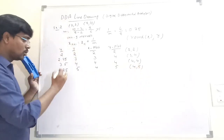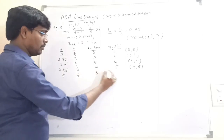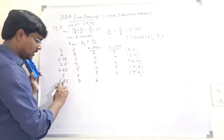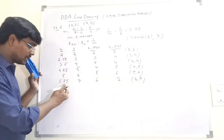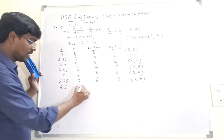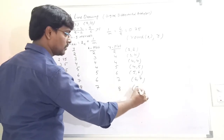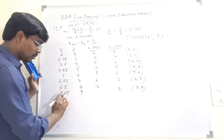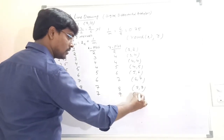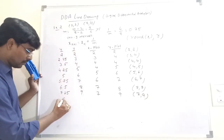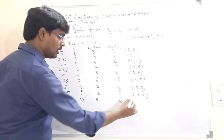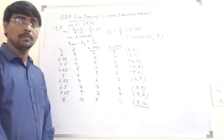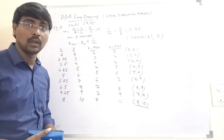Continuing: 4.25 + 0.75 = 5.0, y = 6, plotted (5, 6). Then 5.75, y = 7, plotted (6, 7). Then 5.75 + 0.75 = 6.5, y = 8, plotted (7, 8). Then 6.5 + 0.75 = 7.25, y = 9, plotted (7, 9). Then 7.25 + 0.75 = 8.0, y = 10, plotted (8, 10). Last point reached — stop the procedure. This is the example for slope greater than 1.